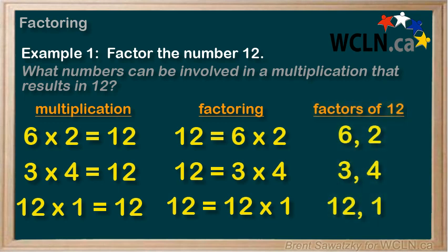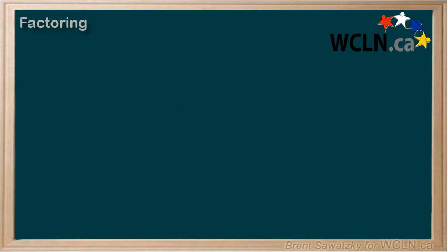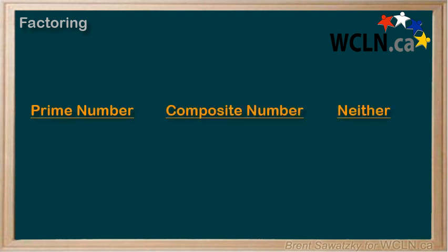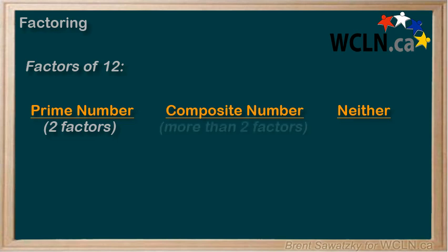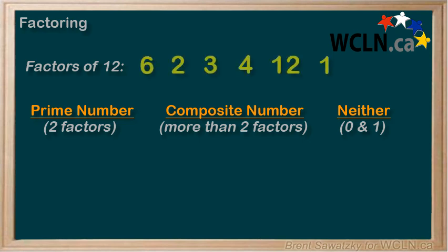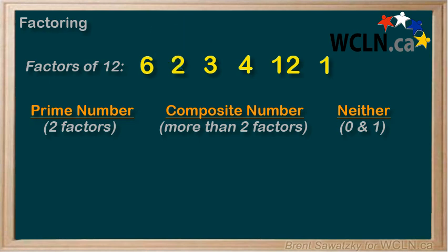Let's take a moment and learn more about factors. Each factor of a number can be identified as a prime number, a composite number, or neither. A prime number has only two factors — itself and 1 — while a composite number has more than two factors. The only numbers we don't categorize as either prime or composite are 0 and 1. Let's look at our factors of 12 and determine which ones are prime, composite, or neither. Starting with 6: being comfortable with our times tables allows us to quickly recognize that 6 times 1 and 2 times 3 both result in 6. So with more than two factors, 6 must be a composite number.